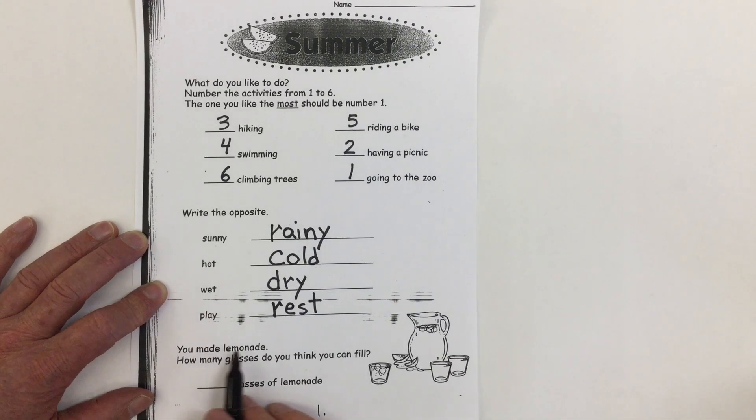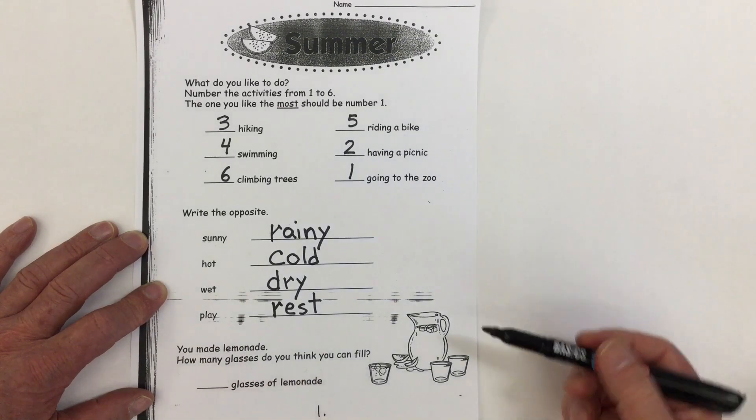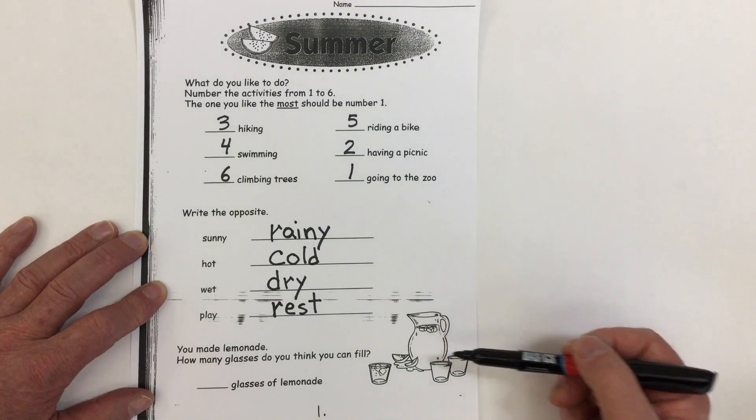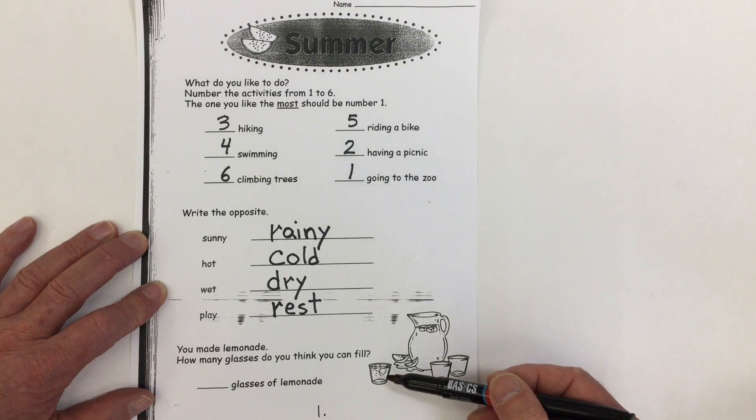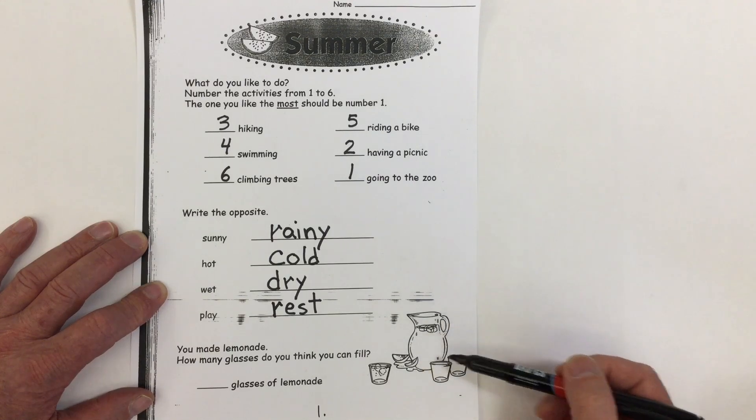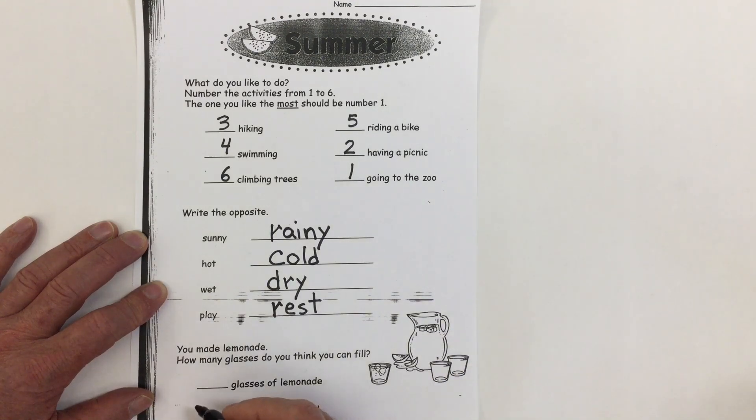Here it says, you made lemonade. How many glasses do you think you can fill? Look at the size of the pitcher. Look at the glass size. Maybe one, two, three. I think we can get more than just what's here. I'm going to say, I bet you we can fill six glasses. That's my guess.